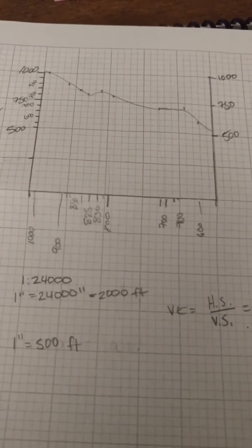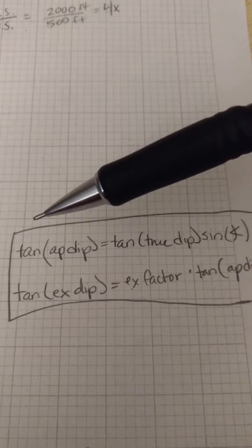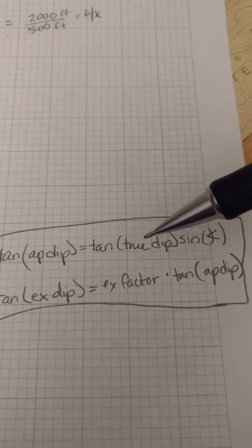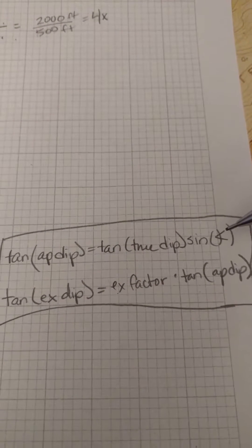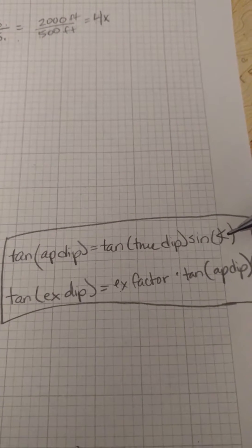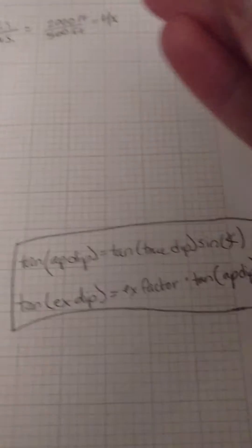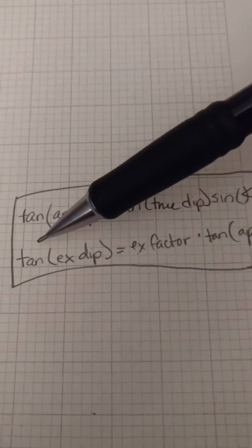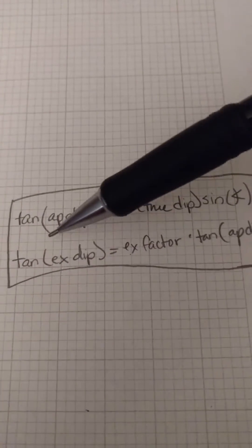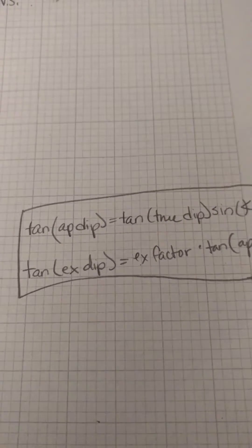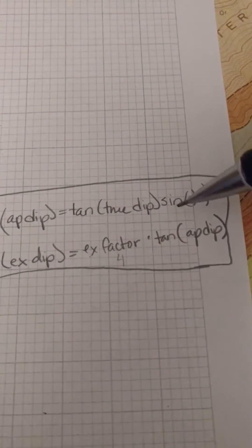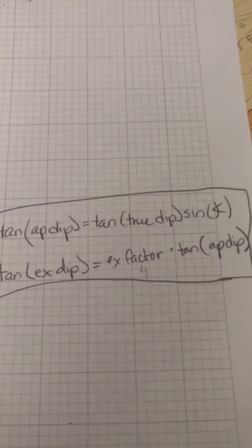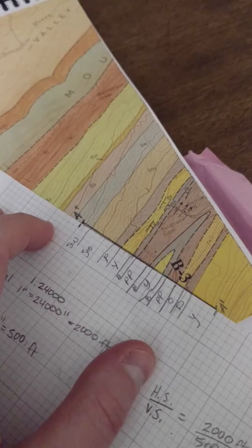So now, for this next part, we've got to draw in our stratigraphy. Here's what I want you to keep in mind. There's two formulas going into this next part. The tangent of the apparent dip is going to be the tangent of the true dip times sine of the angle. That's the angle between the strike symbol and your line that you've chosen to make your tick marks along. And then there's also this other formula in here, that the tangent of the exaggerated dip, which is actually how you're going to draw it, is your exaggeration factor, which for us we did four, times the tangent of the apparent dip.